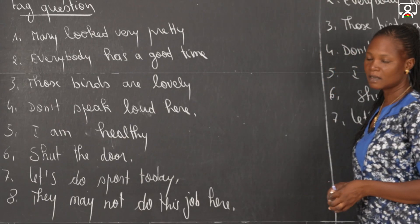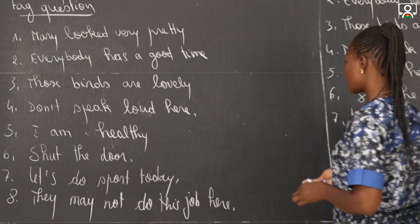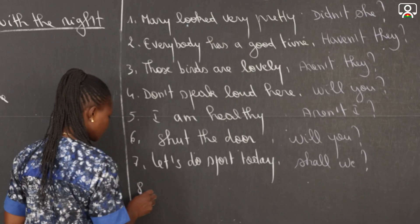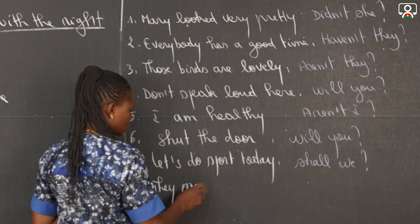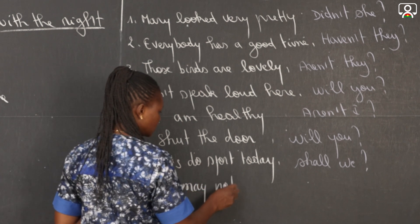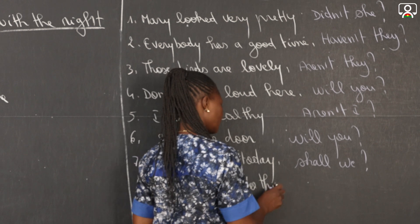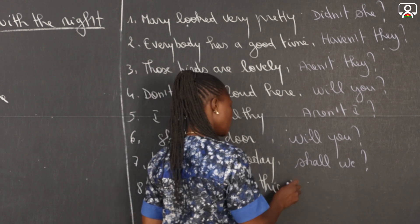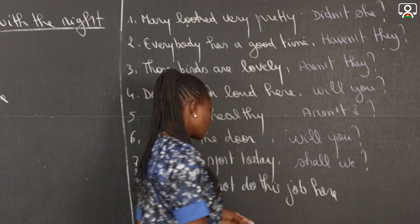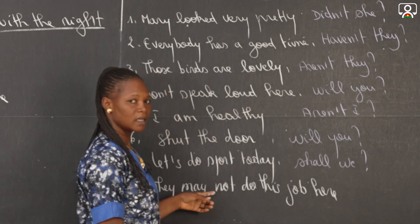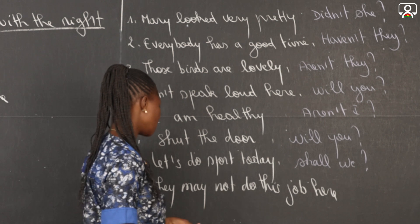Now the last sentence is: they may not do this job here. So our sentence is negative, so the tag should be positive.